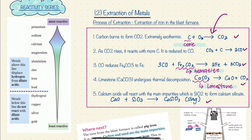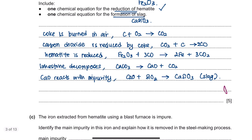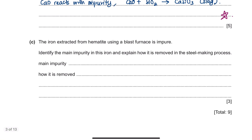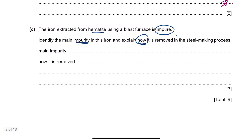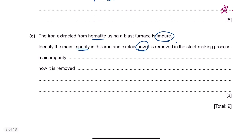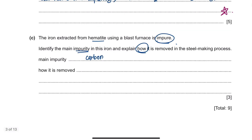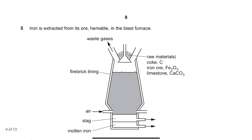It is important to memorize all five steps, as this is a common IGCSE question. Part C asks: the iron extracted from hematite is impure — identify the main impurity and explain how it is removed in the steel-making process. The main impurity is carbon. To remove it, pass oxygen gas through so it reacts with carbon to form carbon dioxide, which is then removed as waste gas.